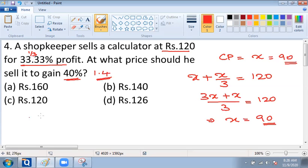So you need to multiply this 90 with 1.4 and that will give you the correct answer here. 90 into 1.4 equals 126. So we can see that option D reads 126 and that will be the answer for this question.